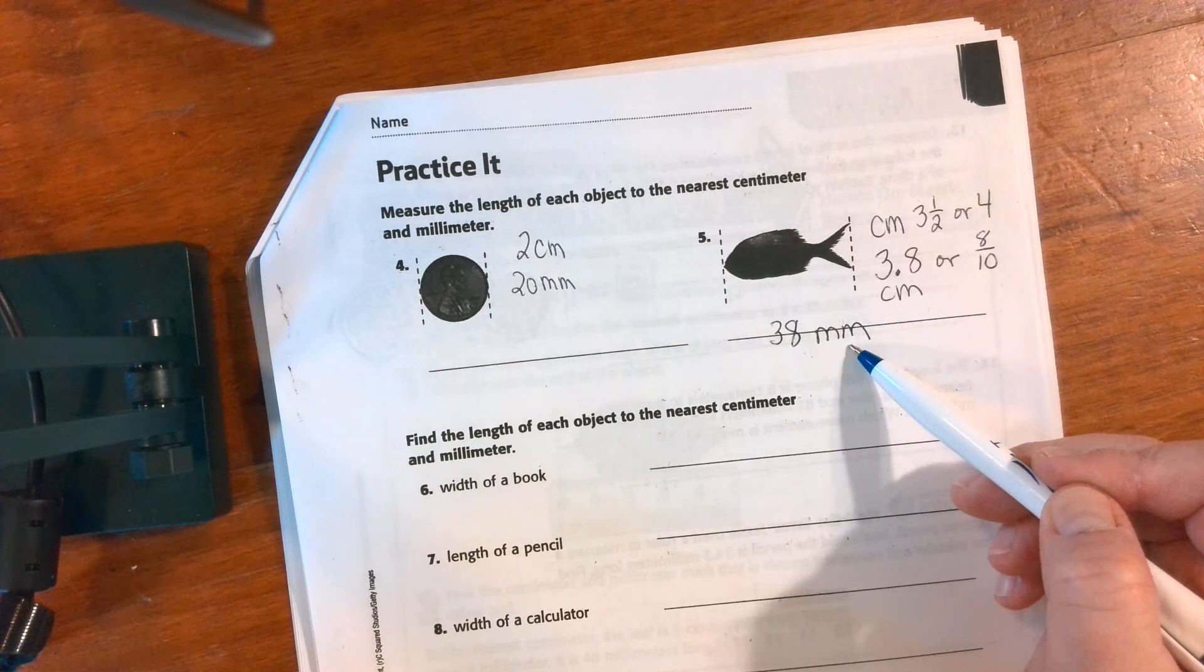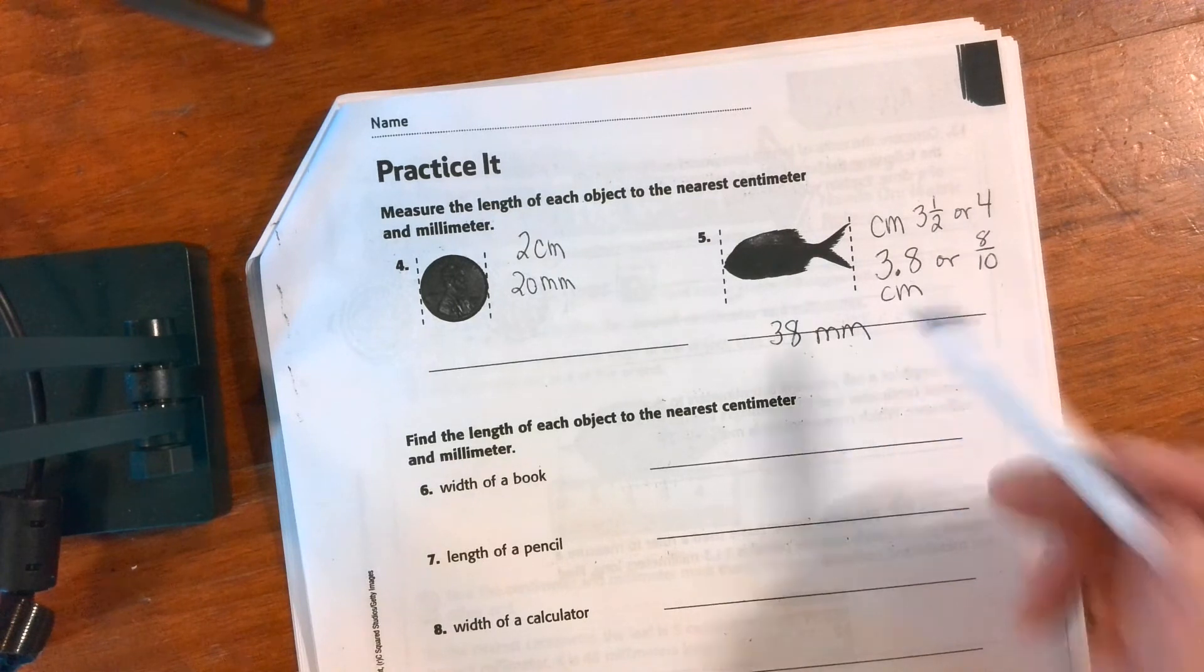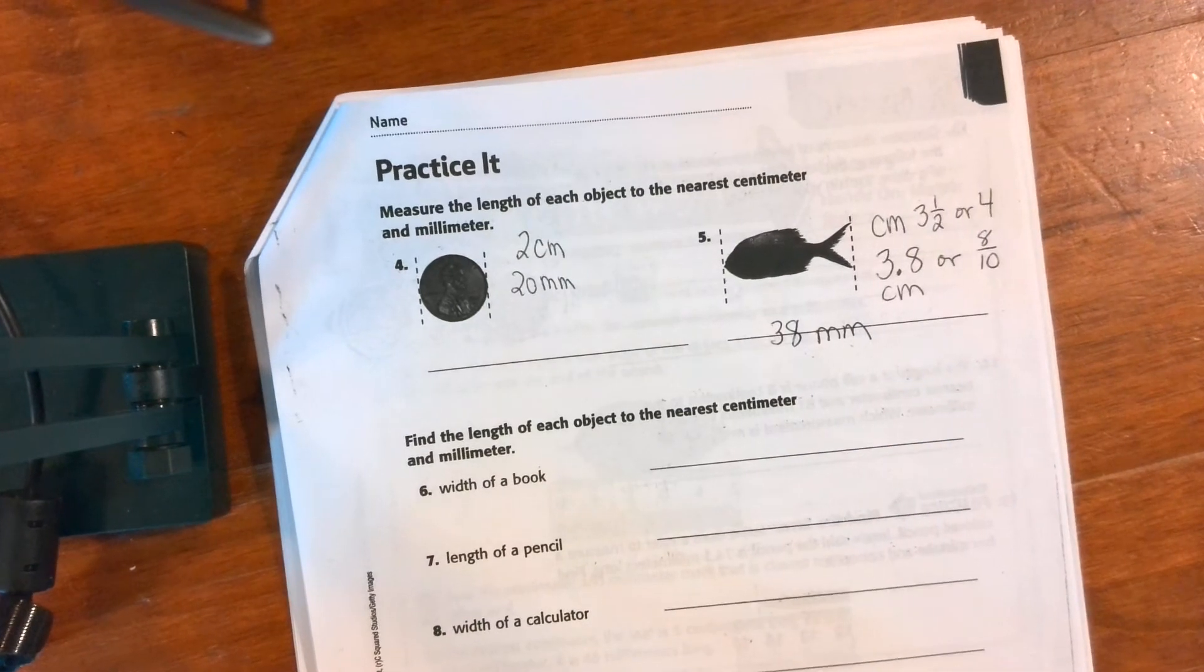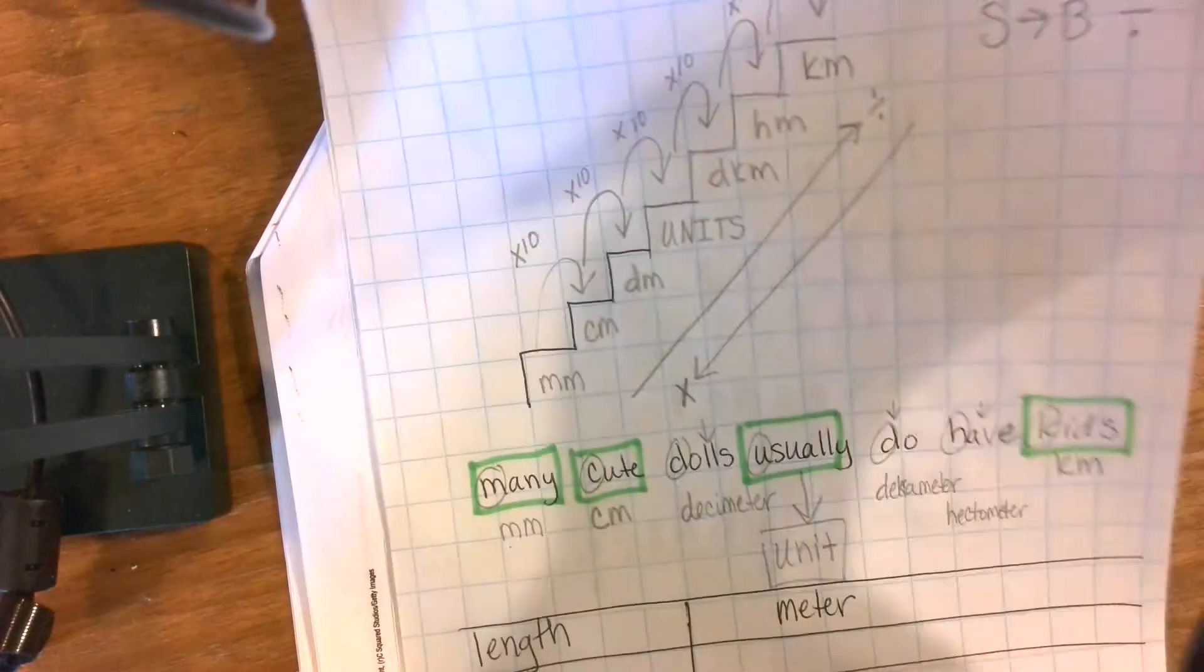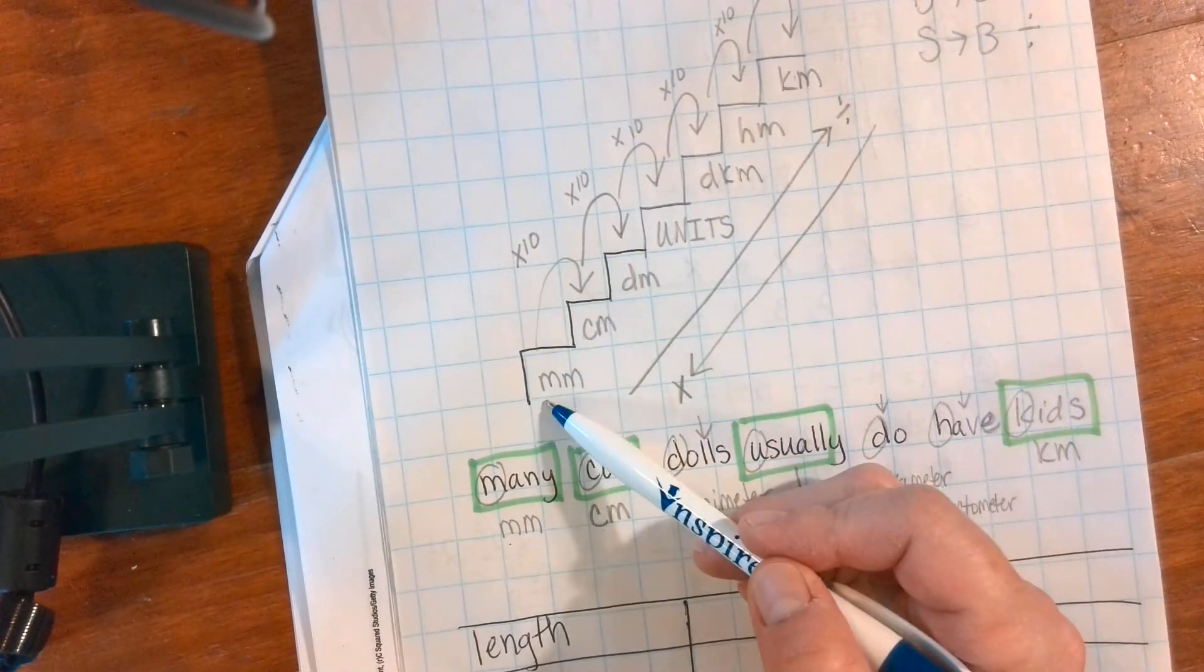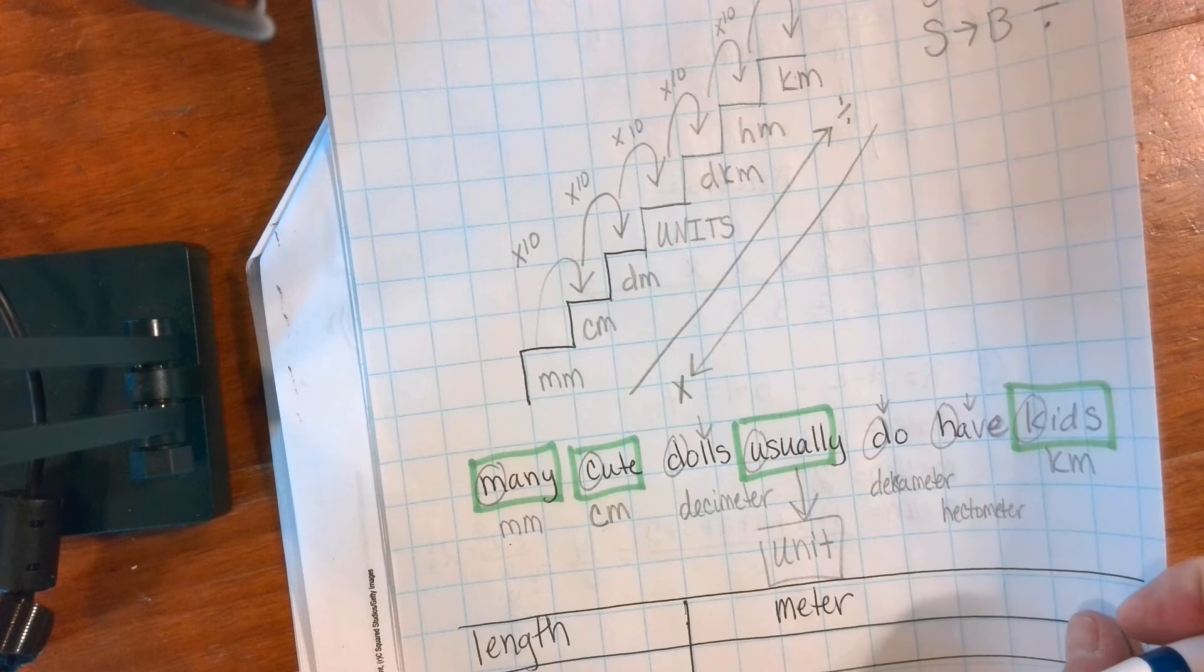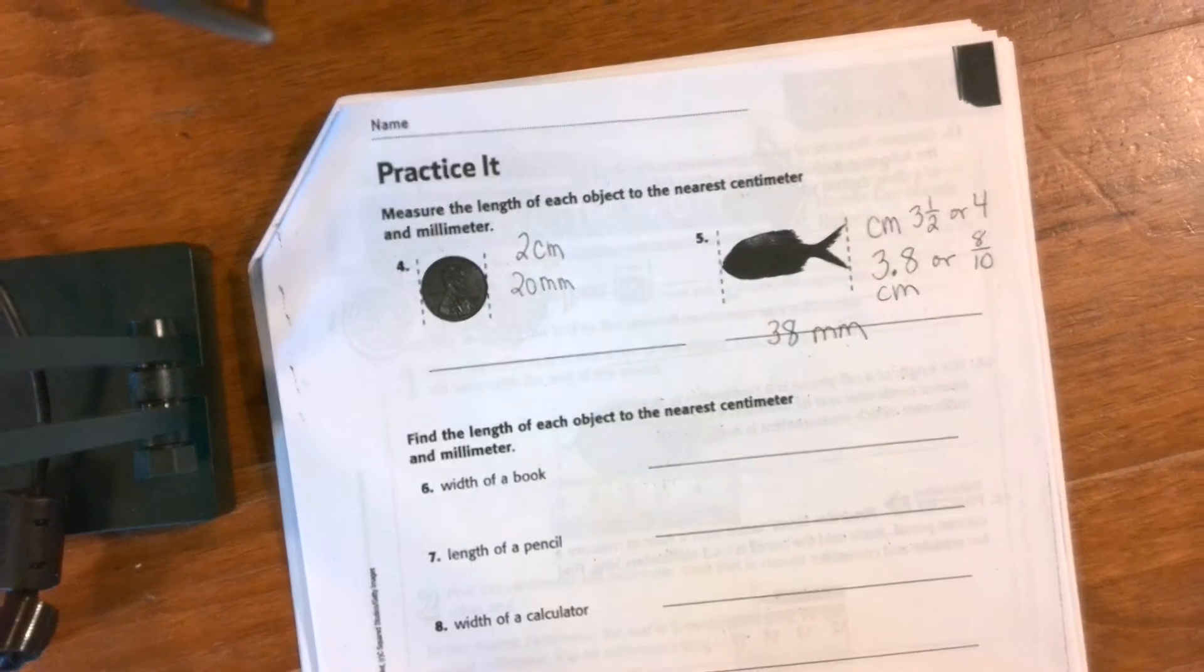Ten, one power of ten. And in fact we did that because it's one step on our metric measurement steps. Remember we said when you go from one step to another you're either going to multiply or divide by ten.